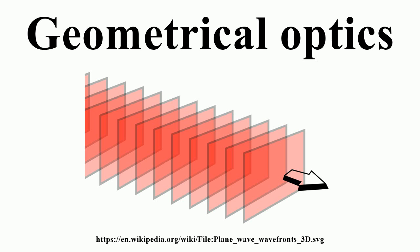Other curved surfaces may also focus light but with aberrations due to the diverging shape causing the focus to be smeared out in space. In particular, spherical mirrors exhibit spherical aberration.